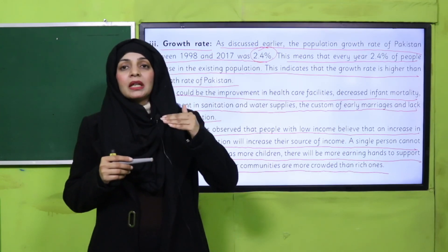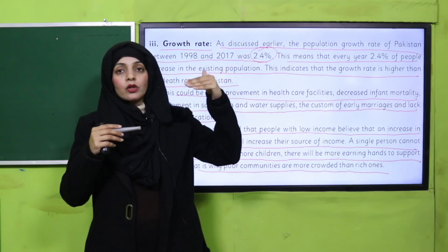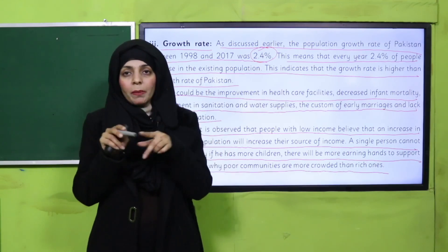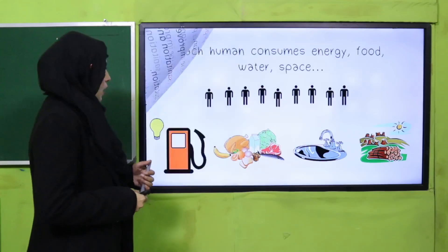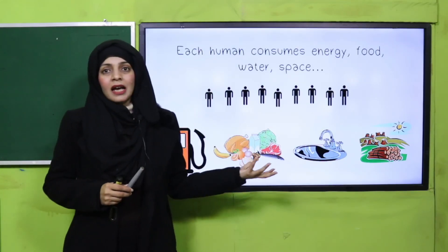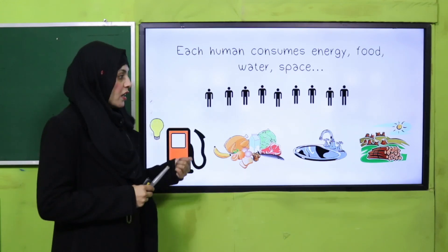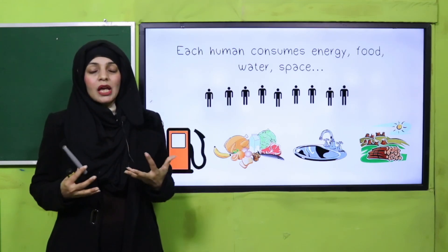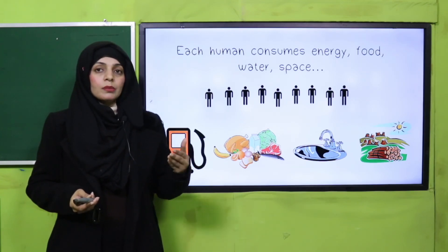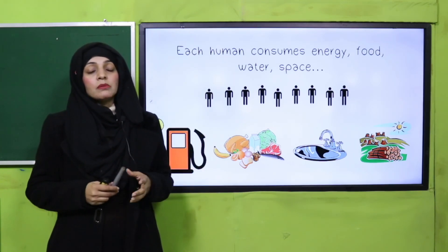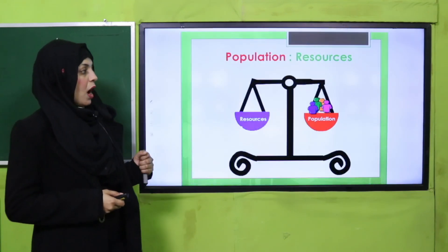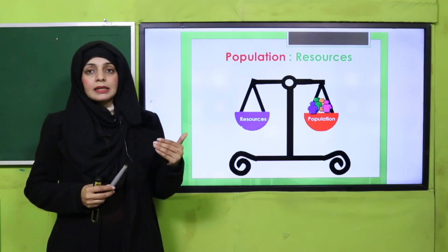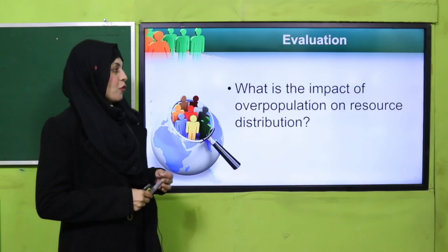Is tariqe se gharib log mazid gharib hote jate hain. Jo log ghurbat ki lakeer se neeche hain unki abadi zyada hai aur jo upar hain unki abadi zara kam hoti hai — it is all because of lack of awareness. Jab afraad zyada ho jate hain to unko paani, energy, khana, aur tamam resources zyada chahiye hote hain. Lekin jis tarikay se growth rate badh raha hai, resources ka intizaam karna bahut difficult ho jata hai.